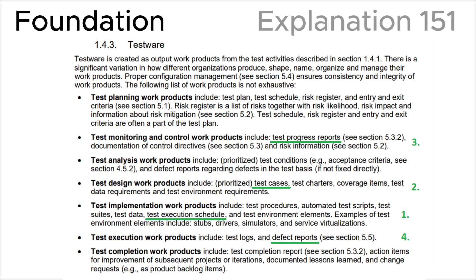Explanation: Let's look at section 1.4.3 of the ISTQB syllabus, where we can see all the test activities according to test work products. All activities specified in the question are underlined with a green line.